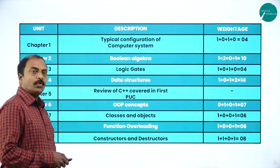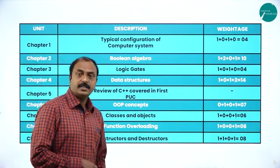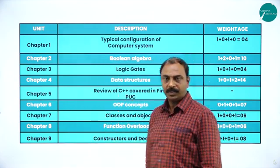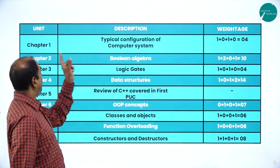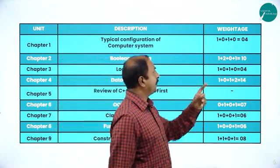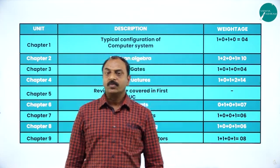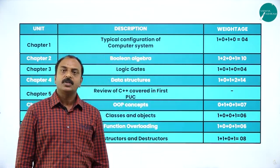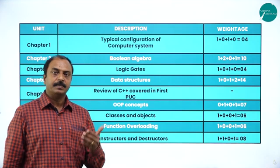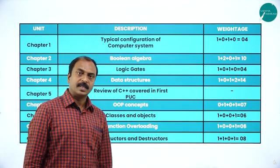Overall, there are 17 chapters in Computer Science. Let us see the description of the chapters one by one along with their weightage. Chapter one is 'Typical Configuration of Computer System' and the weightage of this chapter is four marks — one MCQ and one three-marks question. In this chapter we are going to learn the different hardware parts of the computer system, technical specifications and technical names of all the different types of hardware.